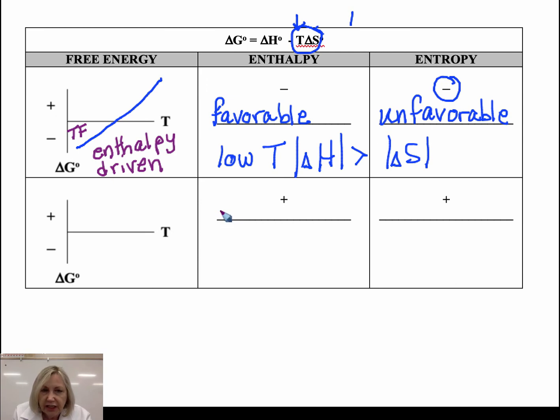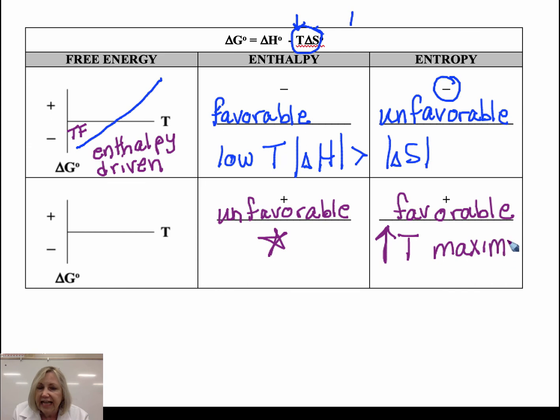All right, let's look at this situation. Here we have an unfavorable or endothermic delta H. But we have a favorable entropy. Okay? It's possible to overcome the unfavorable enthalpy if we increase our temperature to maximize that entropy. Okay?